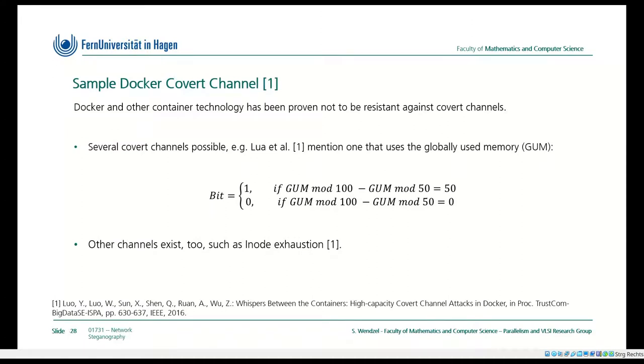There are many, many covert channels known. I will just show you two more examples, one for Docker and one for Android. Docker is a container technology. In general, this is lightweight virtualization technology. Docker technology has shown to be vulnerable to covert channels. Even if you block all network communications between Docker containers, they can still form covert communication. If you assume them to be isolated, it's not the case, at least not fully.